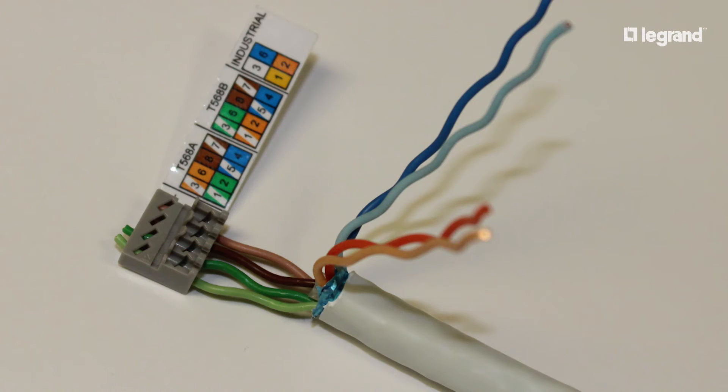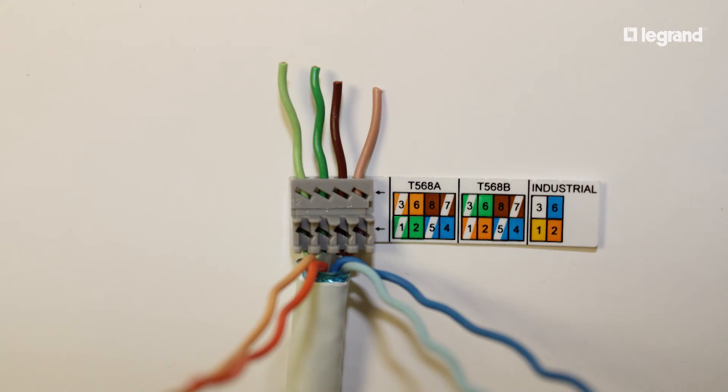With the wiring cap label facing up, insert the bottom row of conductors according to the indicated color code on the wiring cap label. Again, in this video, we're following the T568B wiring configuration. After you've laced the bottom row of conductors through the holes on the wiring cap, slide the wiring cap as close to the cable's jacket as possible.